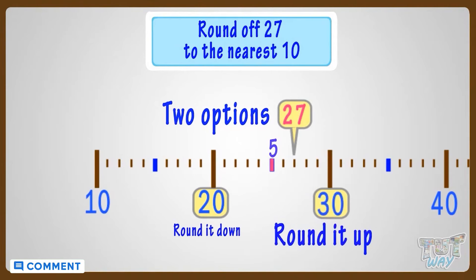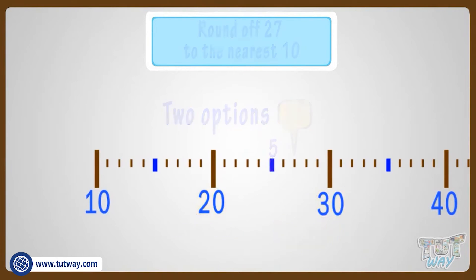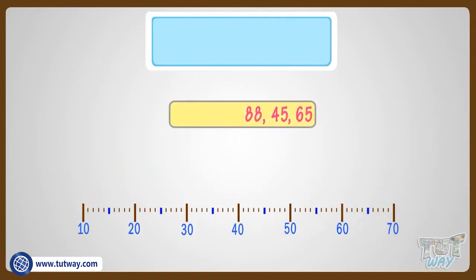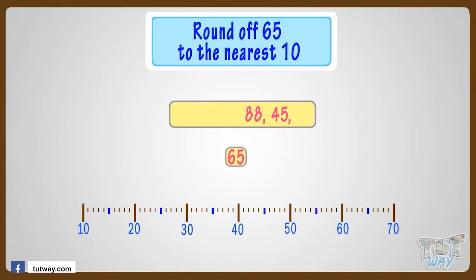Good. Now, let's take another example. Now, we have to round off 65 to the nearest 10. Where can you fit 65 on this number line?